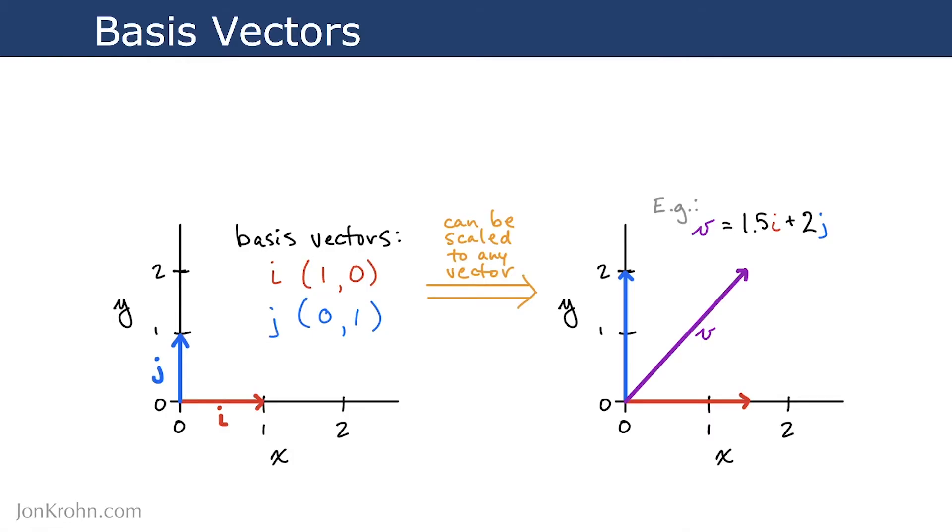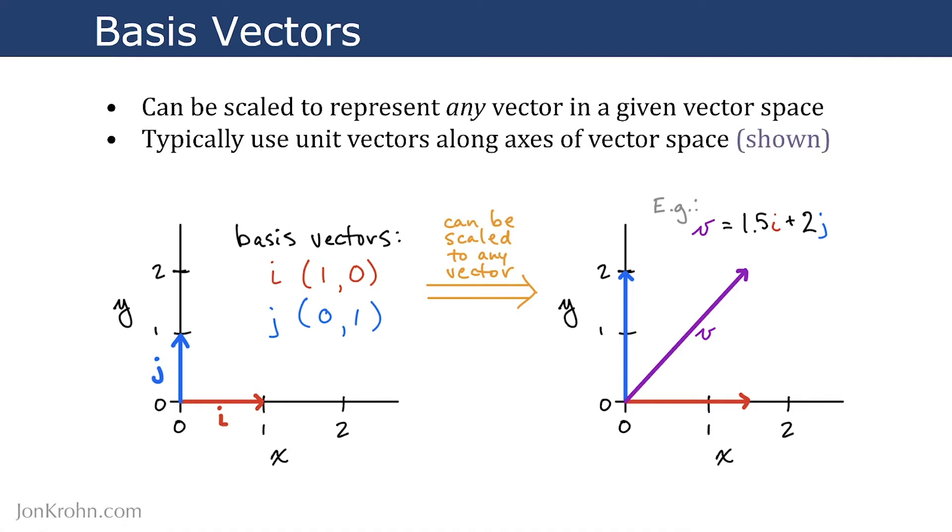Basis vectors are a set of vectors that can be scaled to represent any vector in a given vector space. So we typically use unit vectors along the axes of a vector space for basis vectors. Let me explain what this means.